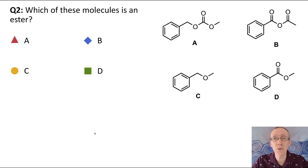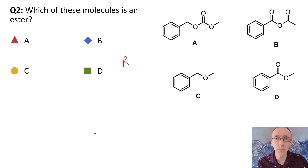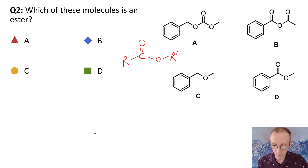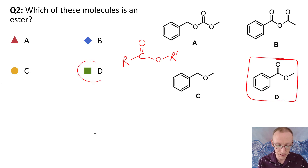Question two is asking which of these molecules is an ester. To be an ester, we must have an R group — some kind of carbon-based group, an alkyl or an aryl group — and then a carbon doubly bonded to an oxygen, which we call an acyl group, and then an oxygen single bond, and then another R group, which we could call R prime. Looking at those four molecules, the one that fits that is D. So the answer is D.